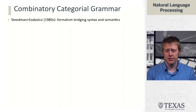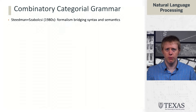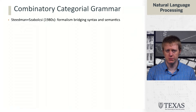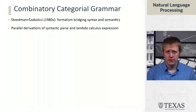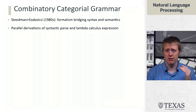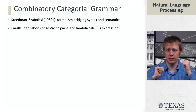In this segment we're going to talk about a semantic parsing formalism called CCG, or Combinatory Categorial Grammar. This is due to Steedman and Sebulksy in the 1980s, and they wanted to formalize a bridge between syntax and semantics. This is going to be a bit of a different syntactic representation than we've seen so far, because it's going to allow us to, in parallel, derive a syntactic parse and also a lambda calculus expression.